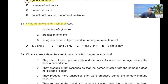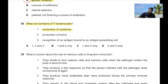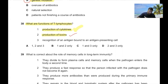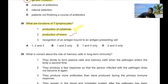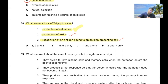Question 38: What are the functions of T-lymphocytes? T-lymphocytes produce cytokines. T-killer cells produce toxins — correct. They also recognize antigens bound to antigen-presenting cells. So 38A is the correct answer.